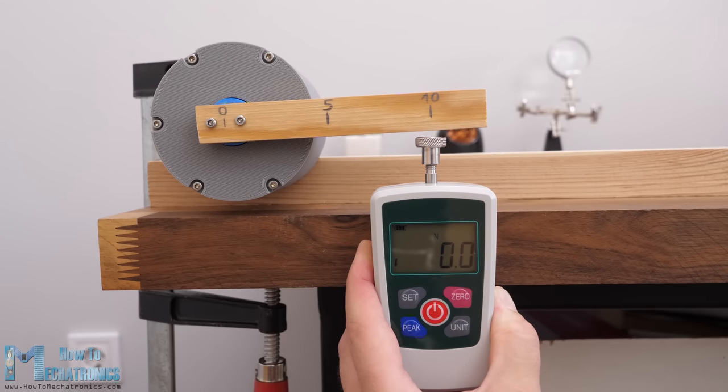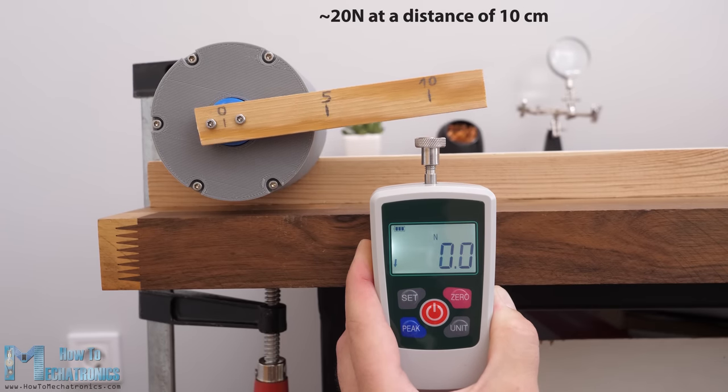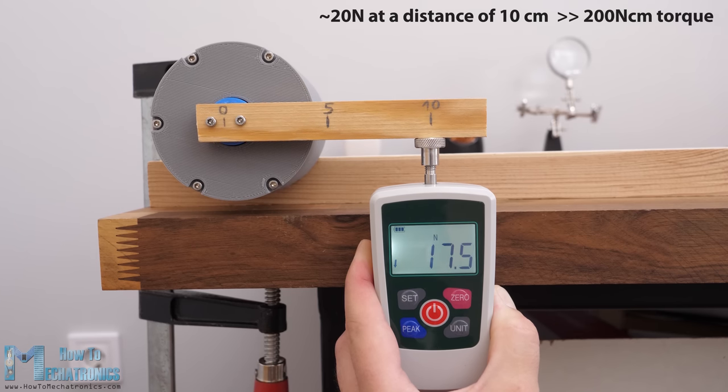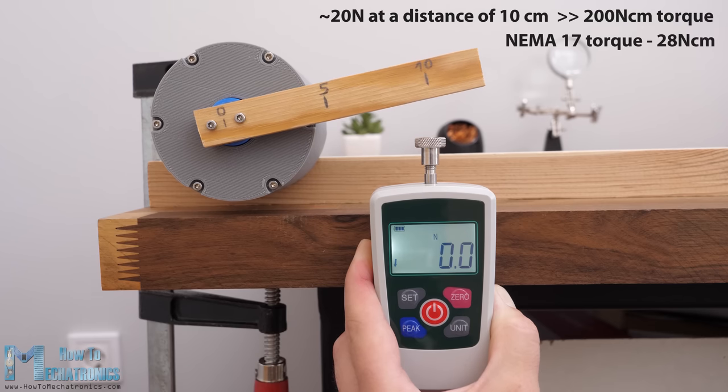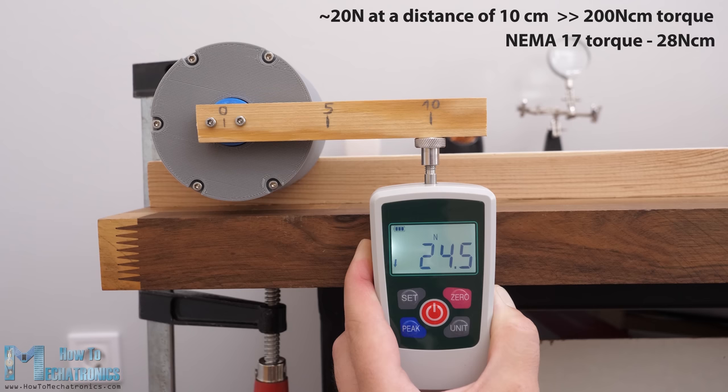As for the torque, as I mentioned I got a reading of around 20 N at a distance of 10 cm. Or that's a torque of around 200 N·cm. Compared to the torque this NEMA 17 stepper motor has without the gearbox, which is around 28 N·cm, that's a torque increase of just around 7 or 8 times.